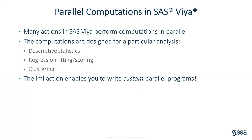SAS Viya supports many actions that perform parallel computations. These actions use SAS Cloud Analytic Services, or CAS. For example, many actions in statistics and machine learning use parallel processing to analyze big data. Examples include summary statistics, predictive models, clustering, classification, and more.